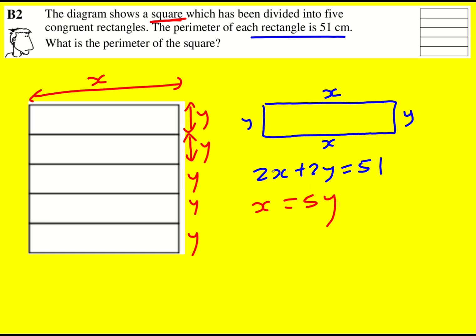So I can actually substitute in, replace that x by 5y, which is going to give me 10y plus 2y equal to 51, and therefore 12y is equal to 51.